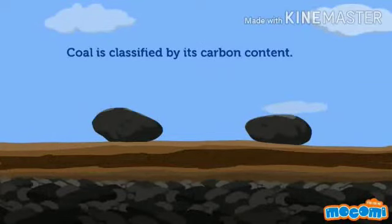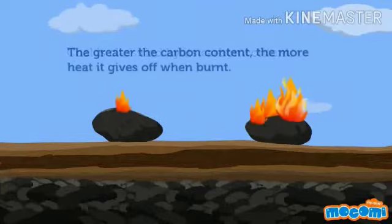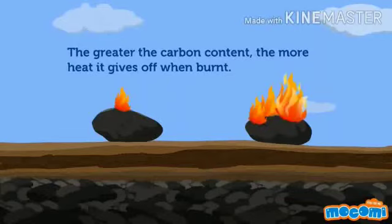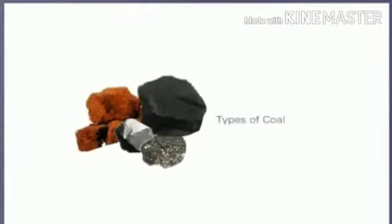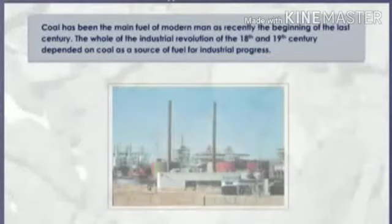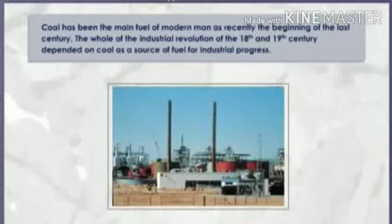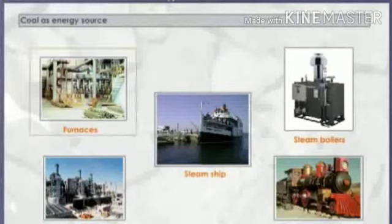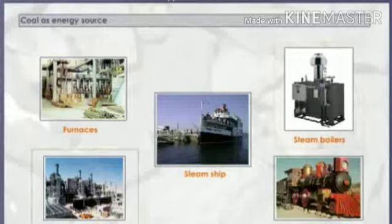Coal is classified by its carbon content. The greater the carbon content, the more heat it gives off when burned. Coal has been the main fuel of modern man as recently as the beginning of the last century. The whole industrial revolution of the 18th and 19th century depended on coal as a source of fuel for industrial progress — furnaces for basic metals like iron and steel, industrial steam boilers, thermal power stations, and locomotive steam engines.